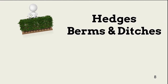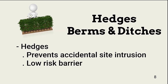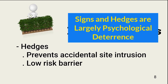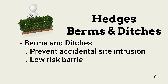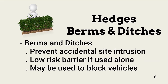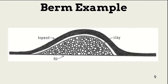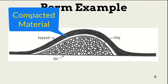Hedges are bushes designed for providing a flora wall. Like signs, hedges are a weak deterrent, but they provide a clear delineation between the site and public access areas. They also prevent accidental site intrusion. They can be combined with berms or ditches for additional deterrence. Berms and ditches also provide ways to delineate site perimeters and prevent accidental intrusion. They can be combined with other barriers to increase deterrence and add vehicle defense. Berm design must take into account the impact on site drainage.